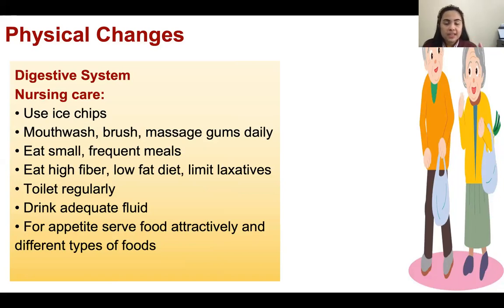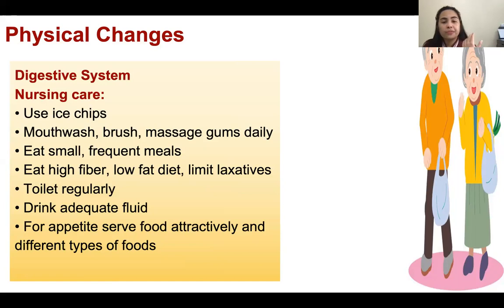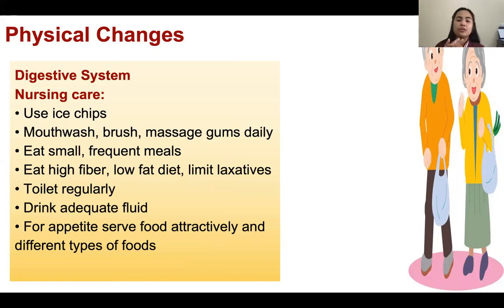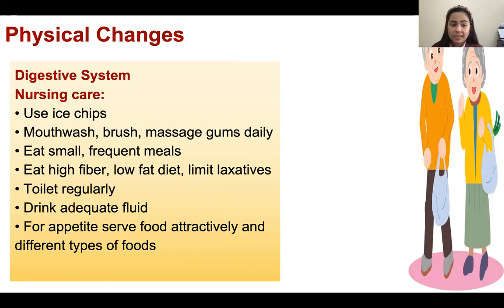What we do for digestive issues: use ice chips and mouthwash, brush and massage gums daily, eat small frequent meals if vomiting, eat high-fiber low-fat diet, limit laxatives, toilet regularly, drink adequate fluids. For appetite, serve food attractively in different types and make it colorful and attractive.